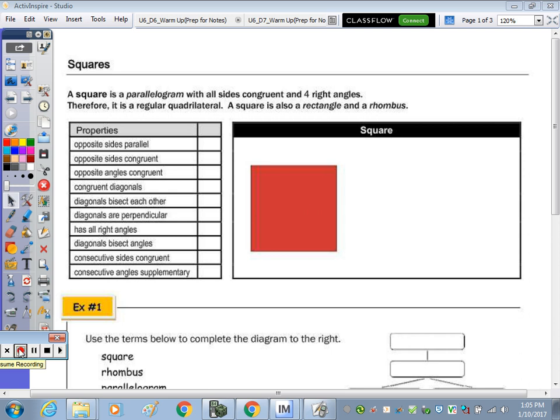Okay, a square is a parallelogram with all sides congruent and four right angles, therefore we can call it regular because regular means all sides and all angles are congruent. A square is also a rectangle and a rhombus.